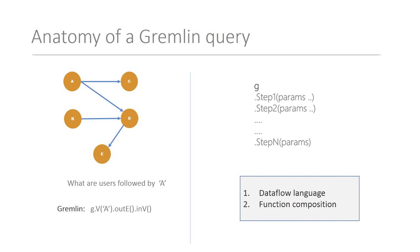Given the previous task, we have a toy graph, and we want to find out what users are followed by user A. The Gremlin query looks like: g.v(A).outi().inv(). Here, g refers to the entire graph. v(A) identifies vertex A within the graph. The outi() step tells you all the outgoing edges from vertex A. And inv() gives all the vertices at the end of those outgoing edges — in this case, C and D are the users being followed by A.